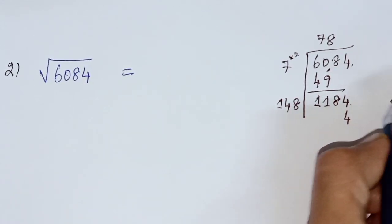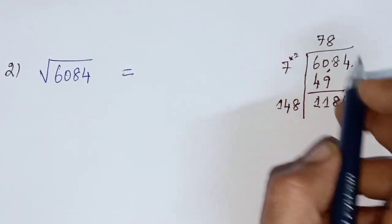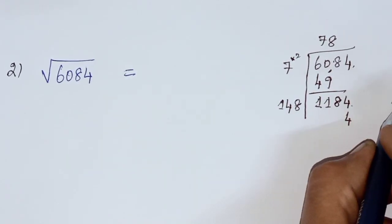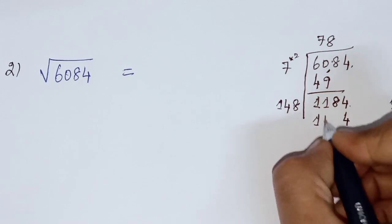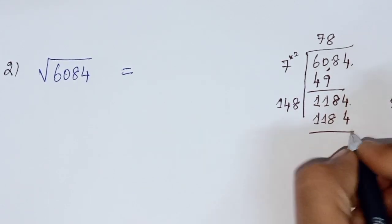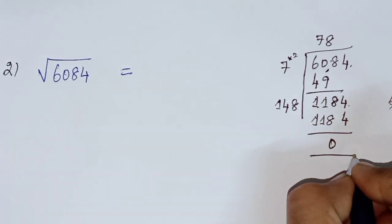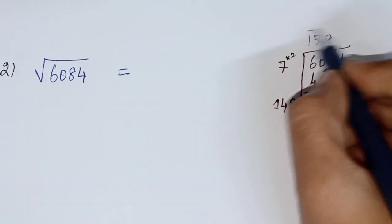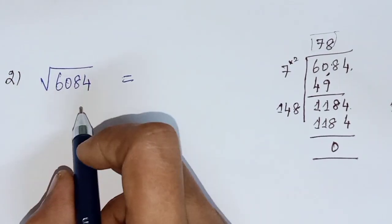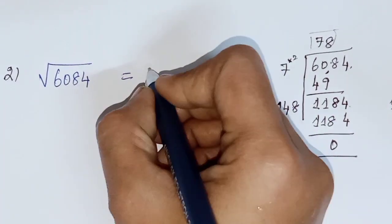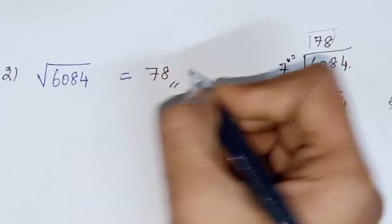Remaining 6, 14 into 8, 112. 112 plus 6, 118. This is minus 0. So our question is 78. So square root of 6084, square root is 78. This is the answer.